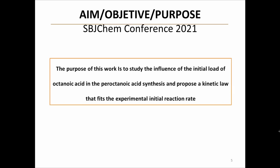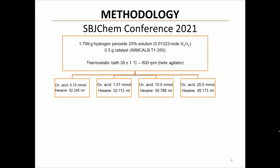The purpose of this work is to study the influence of the initial load of octanoic acid in the peroctanoic acid synthesis and propose a kinetic law that fits the experimental initial reaction rates. Four experimental runs were carried out with the same initial load of a hydrogen peroxide solution and 0.5 grams of catalyst. The temperature was maintained constant at 30°C and the system was agitated at 600 RPM. In each run, a different initial amount of octanoic acid was loaded with the corresponding amount of hexane to maintain the total reaction volume at 54 ml.